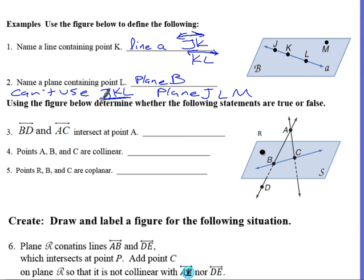Last, I'm sorry, the next section here is a true or false. So, using the figure, determine if the statements are true and false. Do line BD and line AC intersect at point A? Here's line BD, but remember, that goes on forever. So, this line here and line AC, why, yes. They both intersect at point A. That is true.